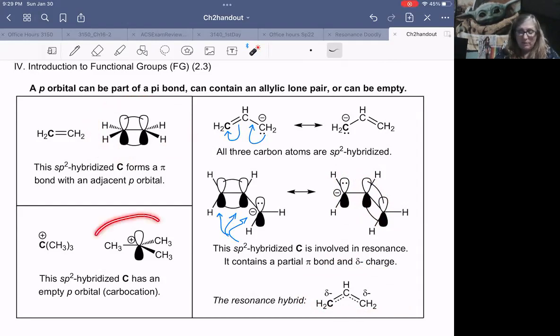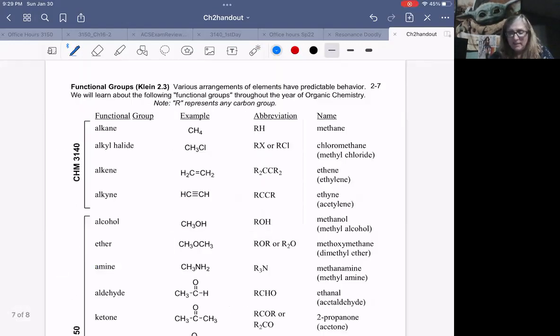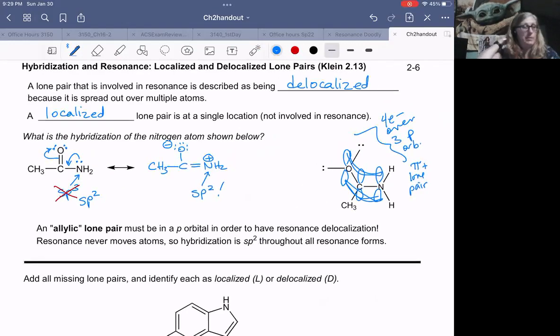Sometimes a p orbital is empty. Anytime you have a carbocation, a carbocation is sp2 hybridized. This carbon is sp2 hybridized because it has just three regions of electron density around it. So it's trigonal planar. And this p orbital is empty. There's no lone pair. It's just an empty p orbital. We will come back to this idea of using p orbitals in resonance down the road.